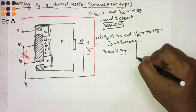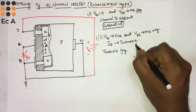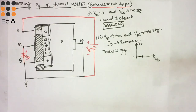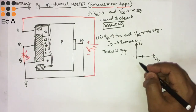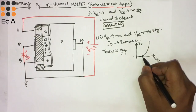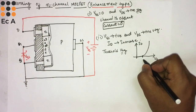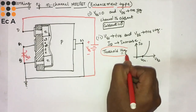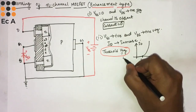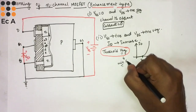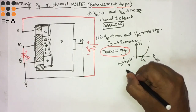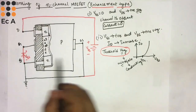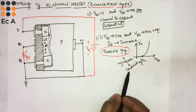If we plot VGS versus ID, the MOSFET will not conduct up to some voltage. Once sufficient electrons accumulate towards the gate, the MOSFET starts conducting. The voltage from where the MOSFET starts conducting is known as the threshold voltage — it is the minimum voltage that must be provided across the gate terminal so that the MOSFET starts conducting.